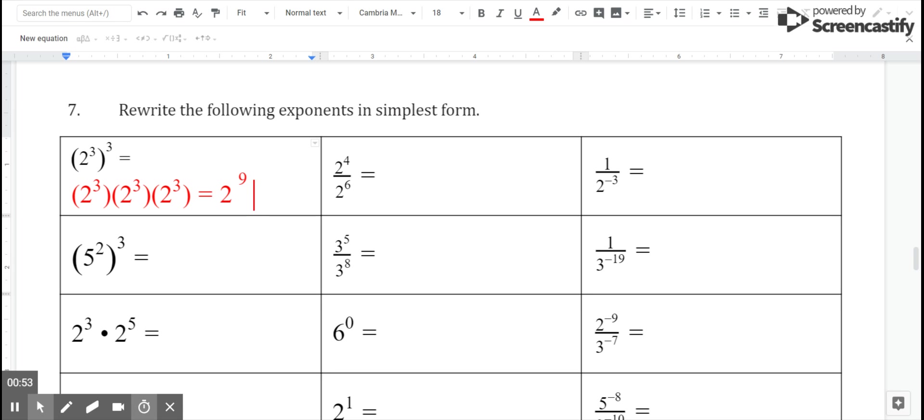Another way to get to two to the ninth power would be to use my power to a power rule. My power to a power rule says that I can take, when I take a power, like two cubed, and raise it to another power, like to the third power,